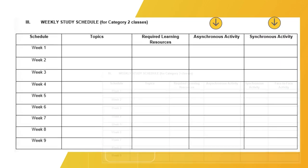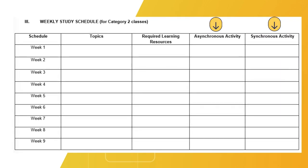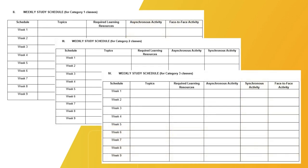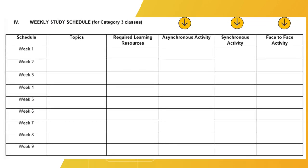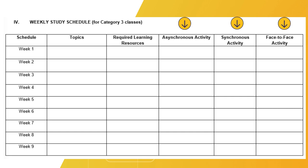For Category 2, under columns 4 and 5, indicate the specific date and time for the student's asynchronous-synchronous activities and face-to-face activities, respectively. For Category 3, under columns 4, 5, and 6, indicate the specific date and time for the student's asynchronous and face-to-face activities, respectively.